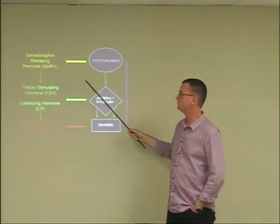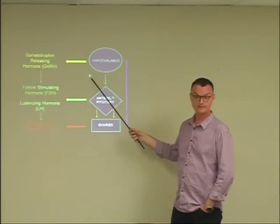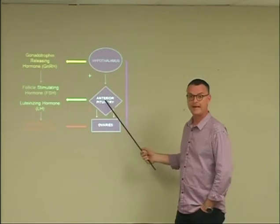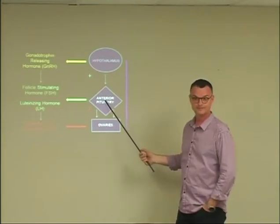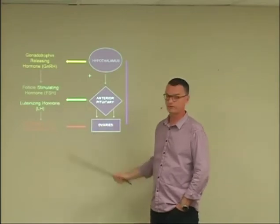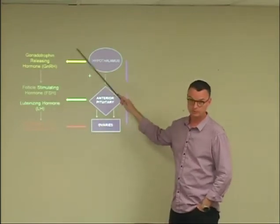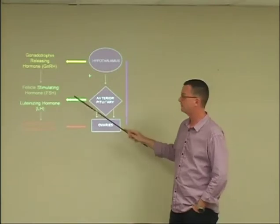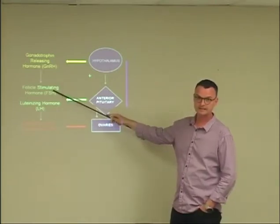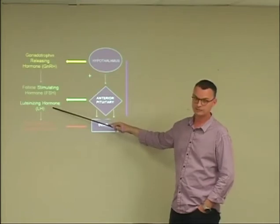The gonadotrophin-releasing hormone turns on a light switch. And the light switch lights up the anterior pituitary. The anterior pituitary then produces two principal hormones. And we're going to examine all these hormones in much more depth. This is just to give you the overview. Follicle-stimulating hormone, otherwise known as FSH. Luteinizing hormone, otherwise known as LH.